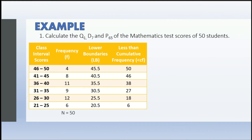Now that we identified the lower boundaries and the less-than cumulative frequency, it is time to solve for Quartile 1. To identify which lower boundary and cumulative frequency to use, we identify the Q1 class first using the formula kn/4. For Q1, since k = 1, we have n/4 = 50/4 = 12.5. We need to find the class interval where the 12.5 score is contained.